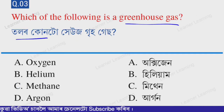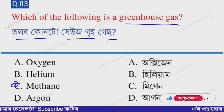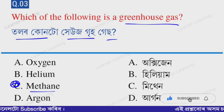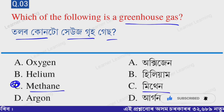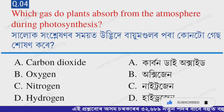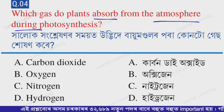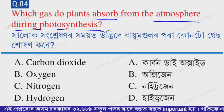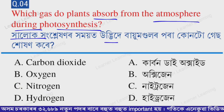The correct option is option C — methane. Methane is a greenhouse gas. Next question: Which gas do plants absorb from the atmosphere during photosynthesis?